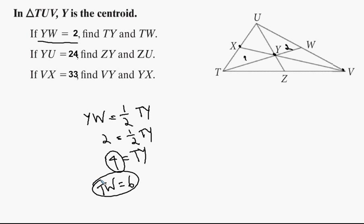And then YU is 24, so that's right here. Obviously these two problems are not in the same scale, so that's okay. We'll just take them independently. YU is 24. We want to find ZY and ZU.